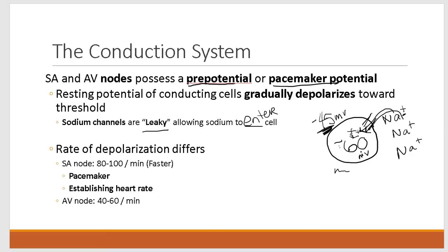The SA node and AV node differ in their rate of depolarization. The SA node, at the top of the right atrium, depolarizes much faster than the AV node — its channels are more leaky, allowing sodium in faster, reaching threshold faster. The SA node depolarizes on average 80 to 100 times per minute, whereas the AV node depolarizes only 40 to 60 times per minute. Because the SA node depolarizes fastest, it establishes your heart rate. We say the SA node is the pacemaker of the heart, because it sets the pace at which your heart beats.